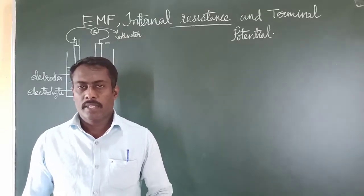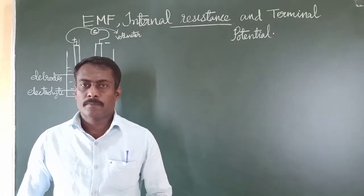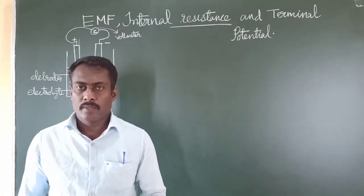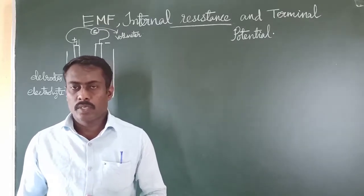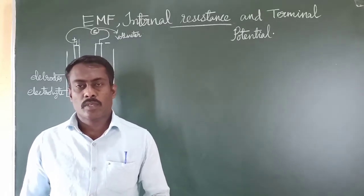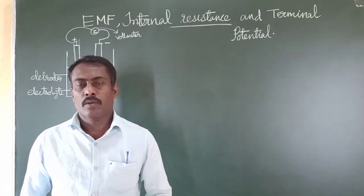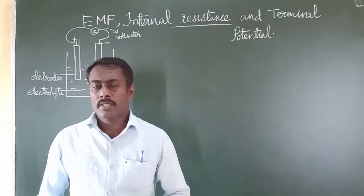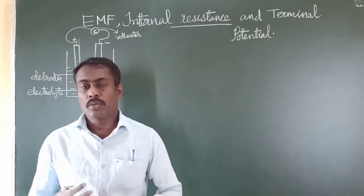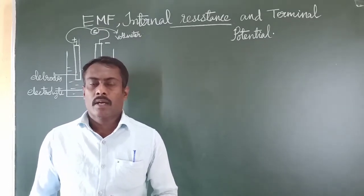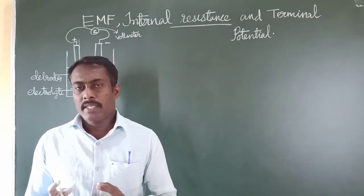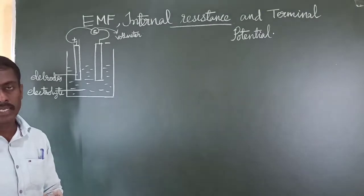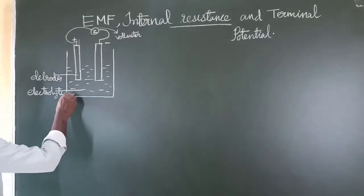Good morning children. Today we are going to describe cells and things related to cells — what is EMF, what is internal resistance of a cell, and what is the terminal potential of a battery or cell. A cell normally stores electric energy in it. Let us see what EMF is and how we can measure or calculate the EMF of a cell. Here we have a battery or a cell.